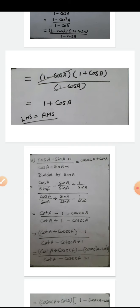Here I have written 'divide by sin A'. We can also understand it as taking sin A common from both numerator and denominator — the meaning is the same. So I divide every term in numerator and denominator by sin A: cos A/sin A - sin A/sin A + 1/sin A in the numerator; similarly cos A/sin A + sin A/sin A - 1/sin A in the denominator. This gives cot A - 1 + cosec A in the numerator.